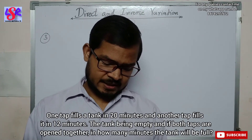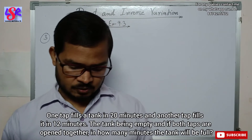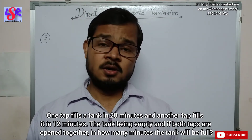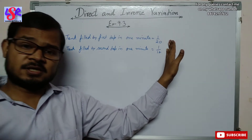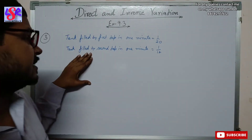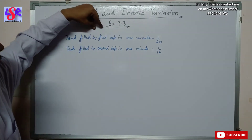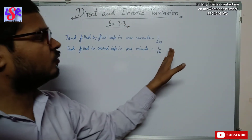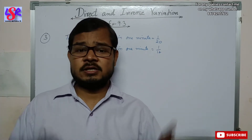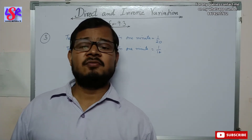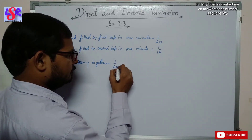Now question number three: one tap fills a tank in twenty minutes and another fills it in twelve minutes. The tank is empty and both taps are opened together — in how many minutes will the tank be full? The tank filled by the first tap in one minute is one upon twenty, and the second tap fills one-twelfth part in one minute. When both taps are open together, they fill both parts, meaning they will take lesser time.